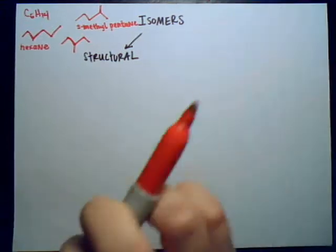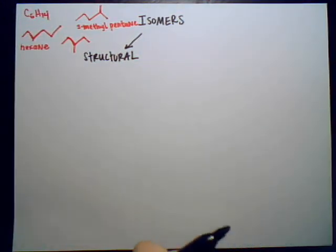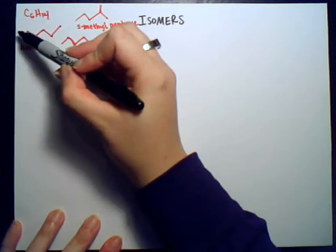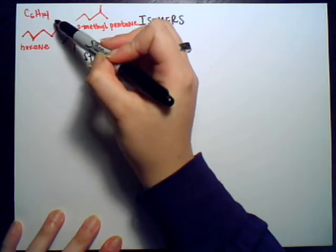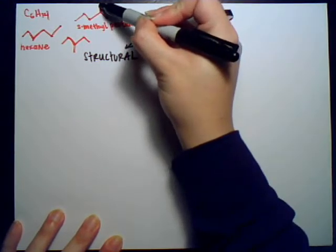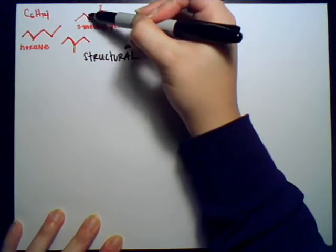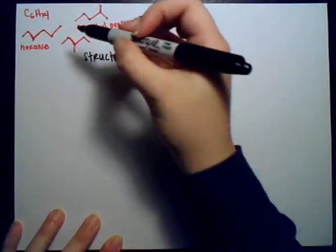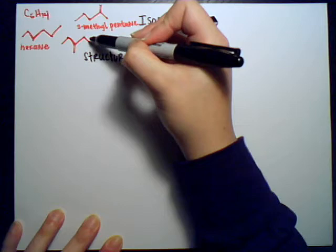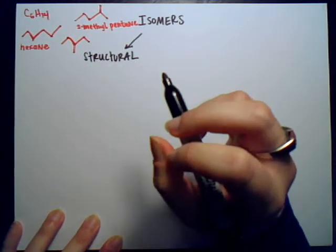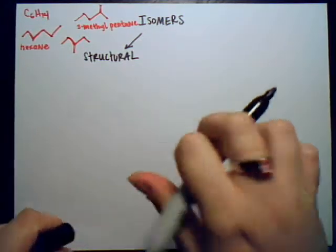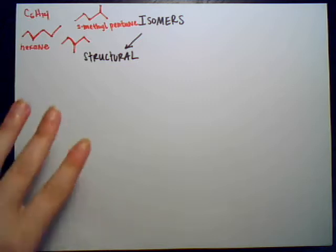Let's just check to be sure — C6H14. Hexane has six carbons and 14 hydrogens. Checking 2-methylpentane: six carbons and 14 hydrogens — that matches. And 3-methylpentane also has six carbons and 14 hydrogens — they all match with the same molecular formula. So we can see that these are in fact isomers of each other, and since they differ in their actual bonding and connections, they are structural isomers. There are no subsections to structural isomers — it's just that.